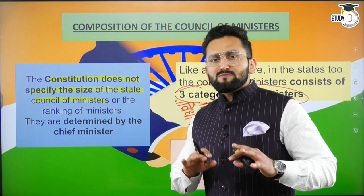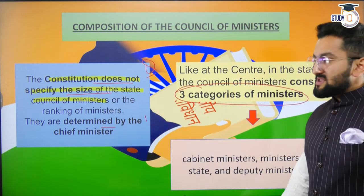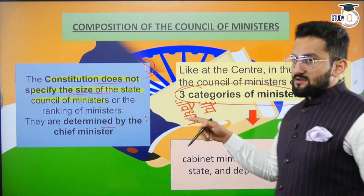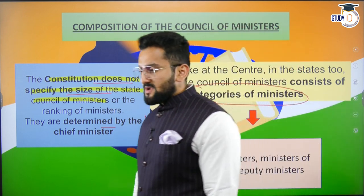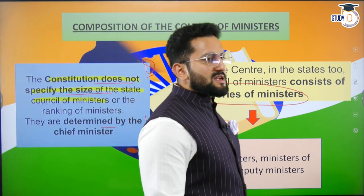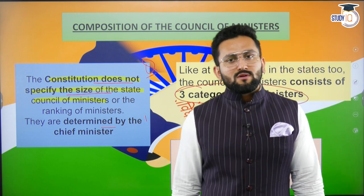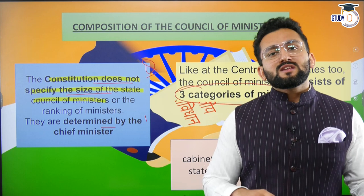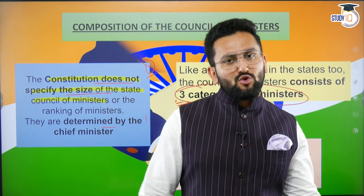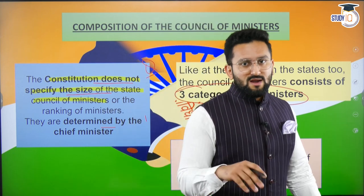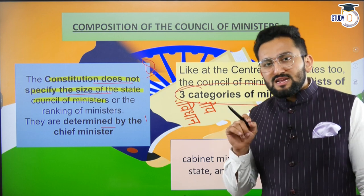Composition of the Council of Ministers: the constitution has not specified any size of the State Council of Ministers — it is determined by the CM, like at the center. Some of you might think: you mentioned 15% maximum from the 91st Amendment. But I said maximum ministers can be 15% of the total strength of the legislative assembly — I have not said you need 15%. That is a decision of the CM. CM may say I am going to have just 13 or 15 ministers. That is the total discretion of the CM. The specific strength is not clearly mentioned in our constitution.